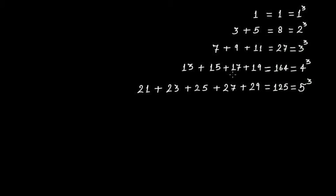Five cubed means five times five times five, which is 125. It has been expressed as 21 plus 23 plus 25 plus 27 plus 29 — that is five consecutive odd numbers.